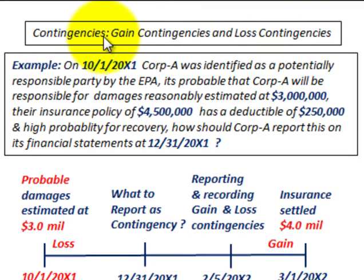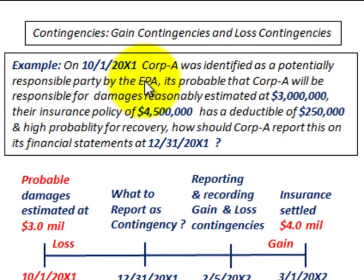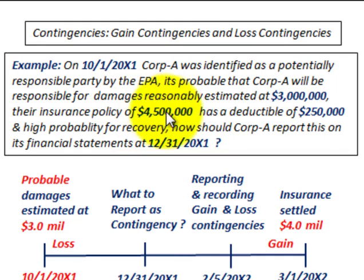We're going to be looking at contingencies — both gain contingencies and loss contingencies. In this example, on 10-1-20X1, Corporation A was identified as a potentially responsible party by the EPA, the Environmental Protection Agency of the United States government. It's probable that Corporation A will be responsible for environmental damages, reasonably estimated at $3 million. Corporation A also has an insurance policy for $4.5 million with a deductible of $250,000, and it's highly probable they'll be able to recover the $3 million through their insurance policy.